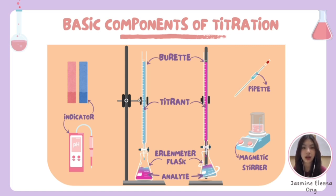An Erlenmeyer flask, which is a conical flask, is used to hold the analyte solution during titration. A pipette is a calibrated glass or plastic tool used for measurement or transfer of a specific volume of liquid, used to accurately measure the volume of the analyte solution. A magnetic stirrer is also needed — it is a small device with a rotating magnet placed under the Erlenmeyer flask to stir the solution thoroughly.